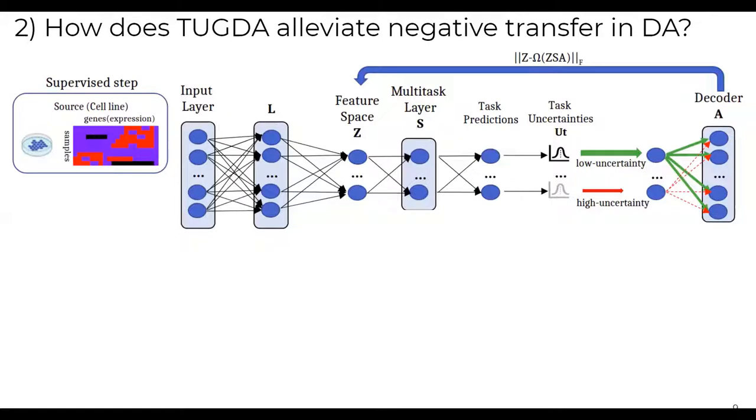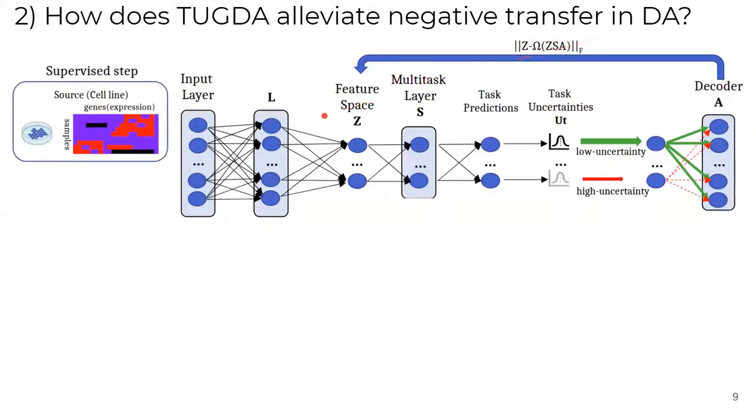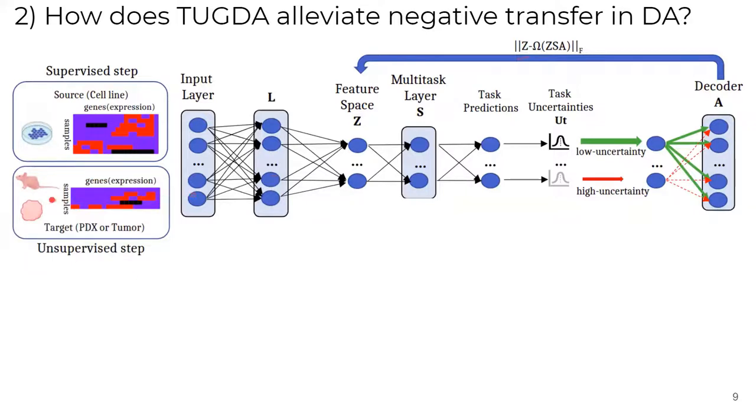So, how does TUGDA alleviate negative transfer in domain adaptation? We extended the TUGDA MTL, including unsupervised step now. In this step, we can use unlabeled PDX data if you want to predict for PDX, or unlabeled patient data if you want to predict for a patient. We also added discriminator D, responsible for classifying the feature Z, either coming from cell line and PDX or cell line and patient. And this is trained adversarially in the sense that features in Z need to fool the discriminator D. Now, we have a feature space Z that contains shared features from different domains.